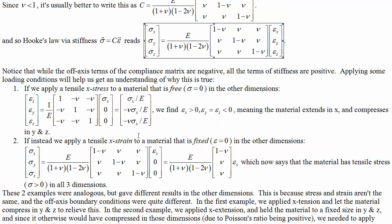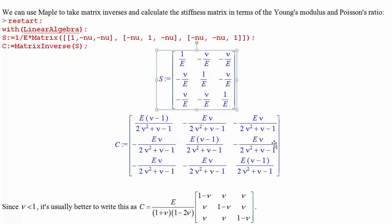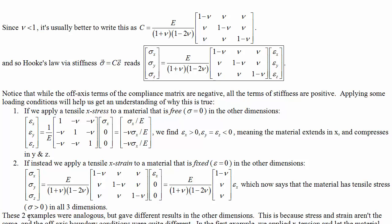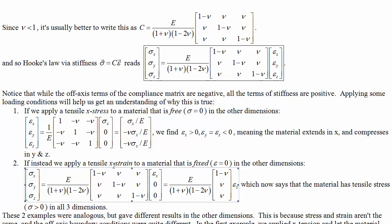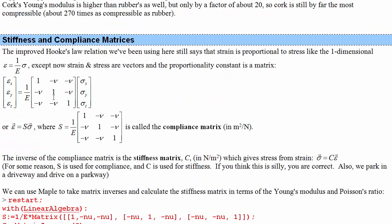Let's make observations about these matrices. The off-axis terms in the compliance matrix are negative, but all terms in the stiffness matrix are positive. This seems asymmetric — the inverse of a matrix with negative off-axis terms has all positive entries. This isn't a contradiction of matrix multiplication; there are still negatives in the stiffness matrix expressions, they just appear differently. Overall, both represent the same three equations, just rearranged.